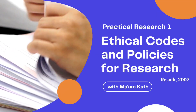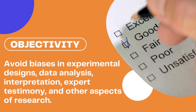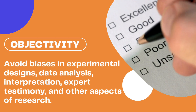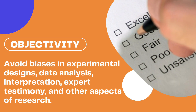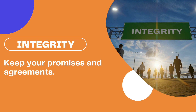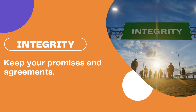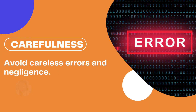Ethical codes and policies for research: Honesty — data should not be faked. Objectivity — avoid biases in experimental designs, data analysis, interpretation, expert testimony, and other aspects of research. Integrity — keep your promises and agreements on your paper and with your respondents. Carefulness — avoid careless errors and negligence.